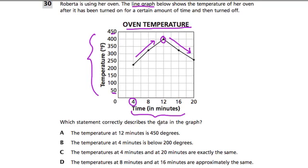Which statement correctly describes the data in the graph? It says A, the temperature at 12 minutes is 450 degrees. Well, if I look at 12 minutes and I go up until I hit this line graph right here...